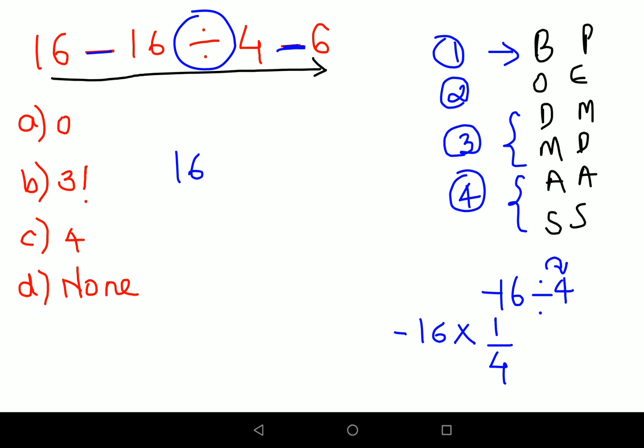So now what happens is 4 over 1 and 4 over 1, so final answer is minus 4. Here you will write 16 minus 4, and then you will continue to write minus 6 as it is.